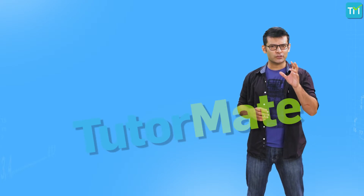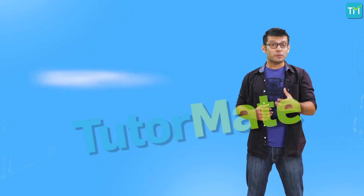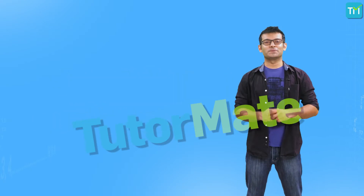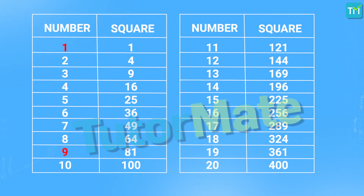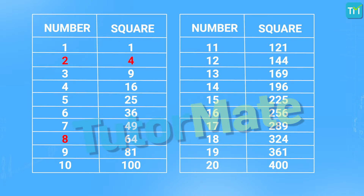There are many interesting things that we can note about squares, and these interesting things are called properties of squares. Observe the squares of 1 and 9 — they are 1 and 81 respectively. Now look at the squares of 11 and 19 — they are 121 and 361 respectively. If we notice the last digit of all these squares, we'll see that it is 1. Just like that, if we see the squares of 2 and 8, they are 4 and 64 respectively. And likewise, squares of 12 and 18 are 144 and 324 respectively. Can you see how each of these squares' last digit is 4?